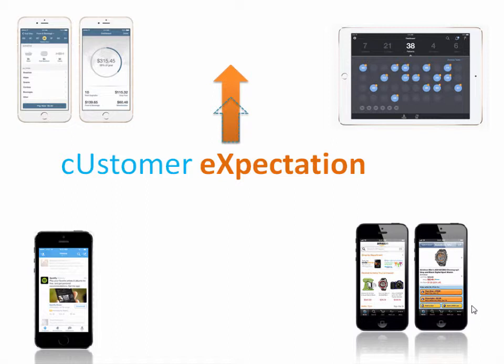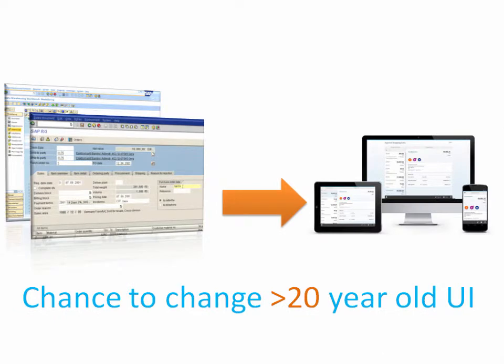The answer is simple. From the past few years, people are using iPhones, shopping at Amazon, using Twitter to collaborate and share. And this has raised the consumer expectation of what software should be like, providing SAP a good opportunity to transform its 20-year-old UI.